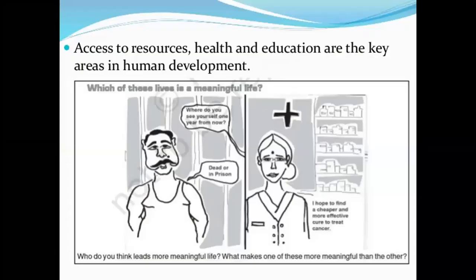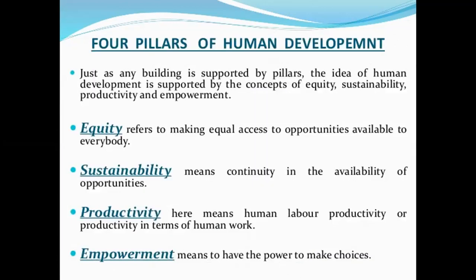Access to resources — health and education — are the key areas in the community. Human life expenses are also considered. The first pillars are equity, sustainability, productivity, and empowerment.